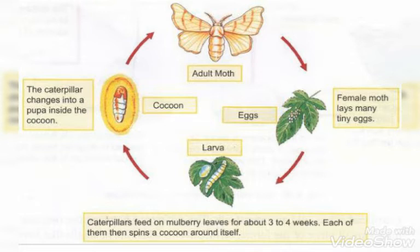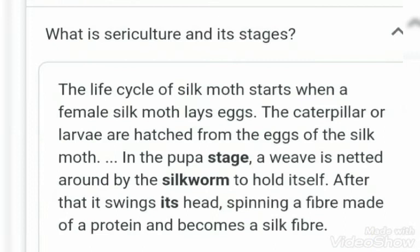Here you can see the diagram that you have to draw in your EVS activity copy. First understand it, then draw it using your own imagination. You can make it more colorful and use your choice of colors in the moth, but draw the similar diagram that has been shown here. Now, what is sericulture and its stages?